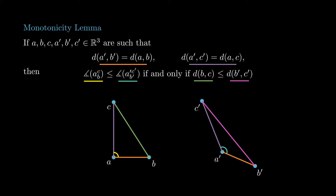Recall that angles satisfy a monotonicity property. That is, if a, b, c, a', b', c' are points in the plane such that ab equals a'b' and ac equals a'c', then the angle at a in the triangle a, b, c is smaller than the angle at a' in the triangle a', b', c' if and only if bc is shorter than b'c'. This follows easily from the cosine law.